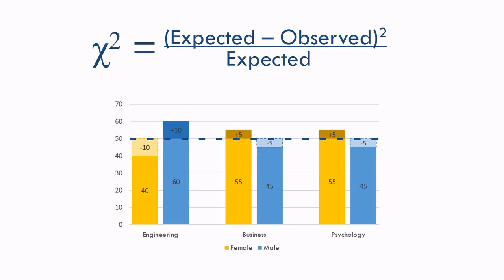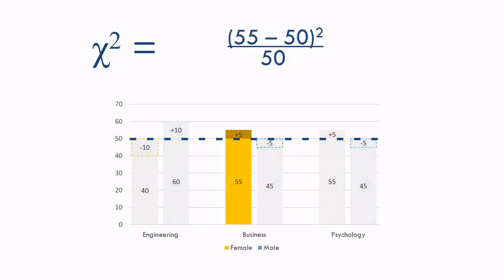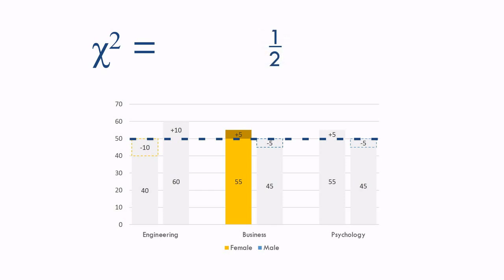So that takes care of our first two groups. Let's look at the next group, which is women in business. Our expected value is still 50 and our observed value is now 55 — that's 5 more than expected. That's the darker yellow section of the bar chart. If we square 5, we get 25. 25 divided by 50 is one half. So our chi-square value is 0.5.